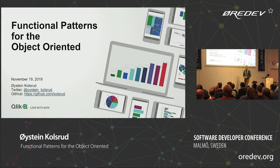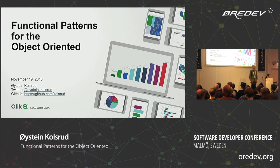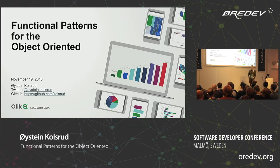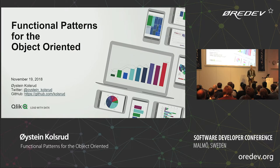My name is Øystein Kohlstrud. I'm a software engineer at Qlik in Lund. At Qlik we use a number of different programming languages, but the one I'm mostly involved with in my day-to-day work is C#. I also have a background from using Haskell as a functional language, and when I joined Qlik about six years ago I was totally new to C#. I was very happy to see that a lot of the things I'd learned in Haskell could also be used in C# — mainly the lambda expressions and the LINQ library that many of you are aware of.